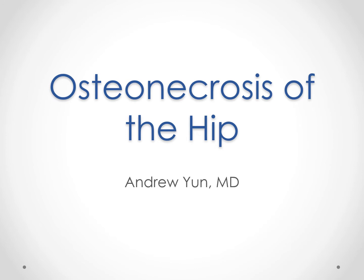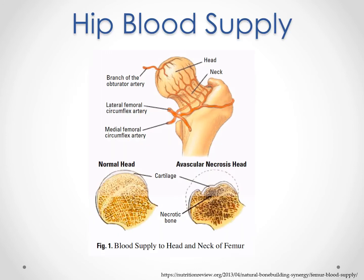Osteonecrosis is known by several names: avascular necrosis, aseptic necrosis, AVN. It all comes down to the same thing — a limitation or lack of blood supply to the top of the femoral head. As we can see in this anatomical drawing, the blood supply to the femoral head comes from below, supplied by the lateral femoral and medial circumflex arteries. These send off small branches or capillaries that bring oxygen and nutrients to the top of the ball, but the blood supply only comes from one direction — there's no redundant supply. So if any one of these small capillaries gets cut off, the bone it nourishes will eventually die.